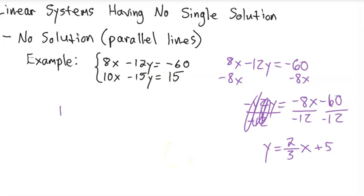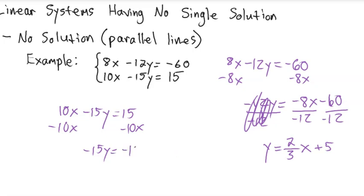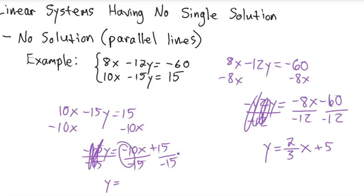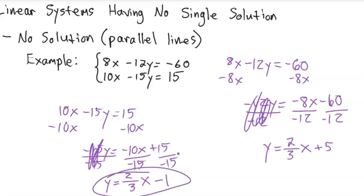Now let's do 10X minus 15Y equals 15. We subtract 10X from both sides and get negative 15Y equals negative 10X plus 15. Then we divide by negative 15: negative divided by negative is positive, 10 over 15 reduces by 5, giving us 2/3. So we have a slope of 2/3, just like the other one. Then 15 divided by negative 15 is minus 1.